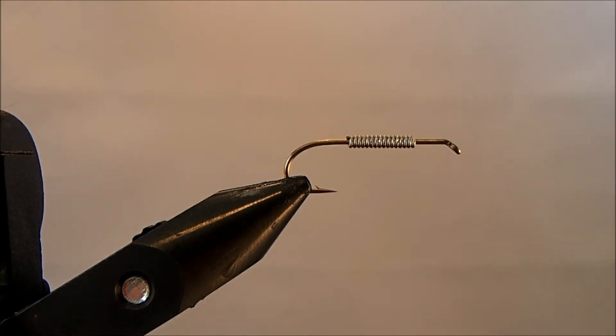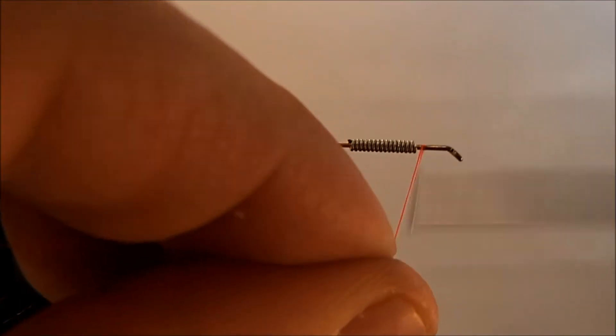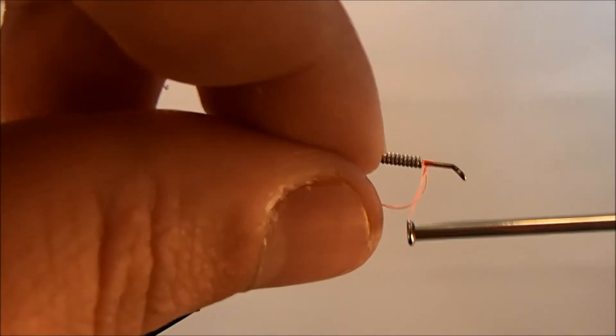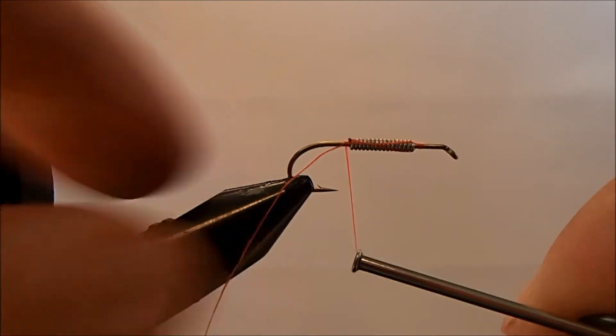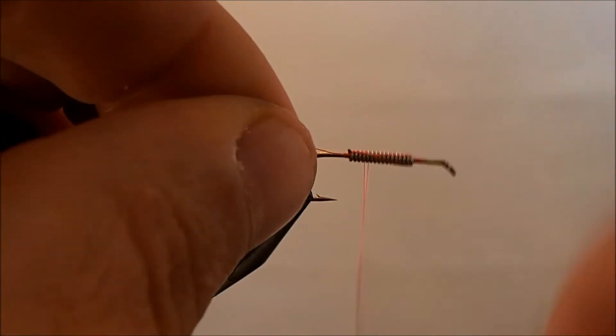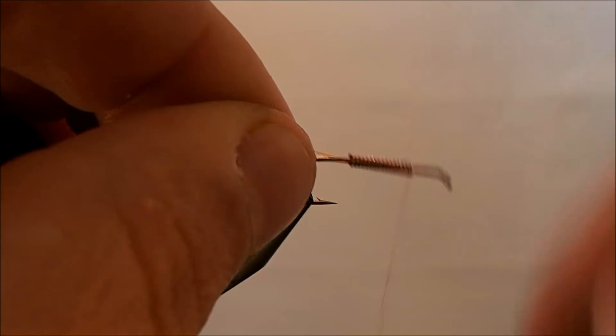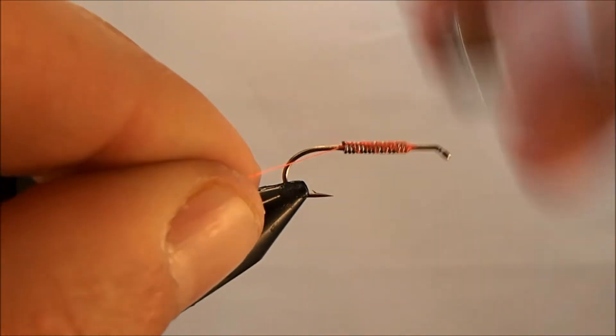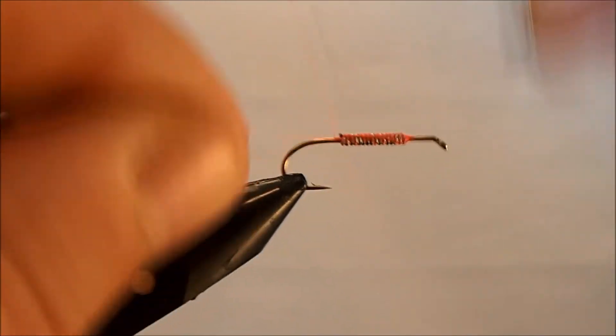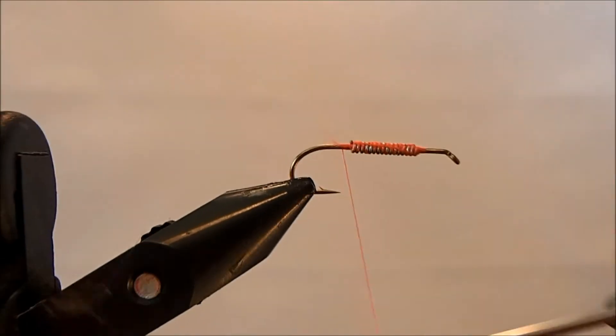I'm going to tie this in a rust and olive color and the legs are going to be orange. I'll start with my wraps in front of the lead and then I'm going to reach all the way back behind and catch it again. This way when I advance my thread, the lead's not going to go anywhere because it's got a thread dam in the front and behind. Then I can break that off.